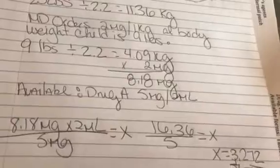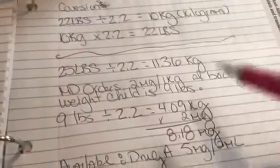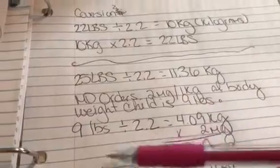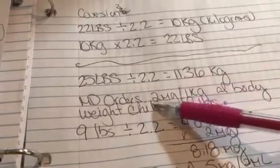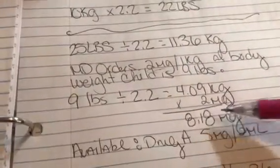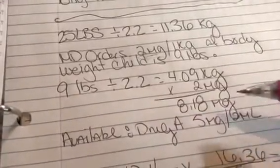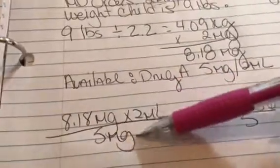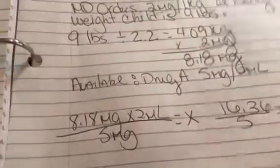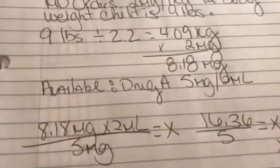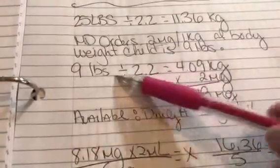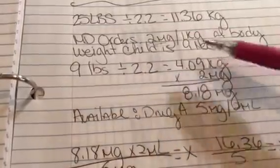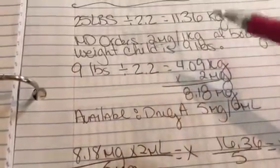9 pounds divided by 2.2 is 4.09 kilograms times 2 milligrams because we have the order right here, gives you 8.18 milligrams. Available, we have drug A, 5 milligrams over 2 milliliters. Then you're going to set it up the way it normally will be. I told you guys this is the basic formula. You always want to divide the pounds by 2.2, get the kilograms, times it times the order, and then you're gonna get this. Here's your available.